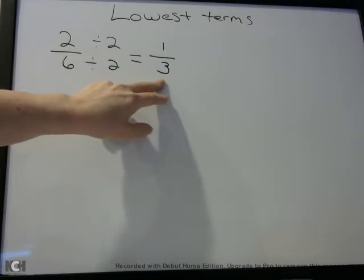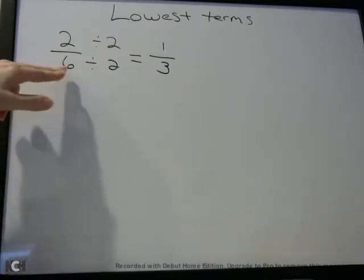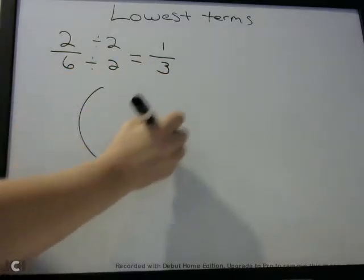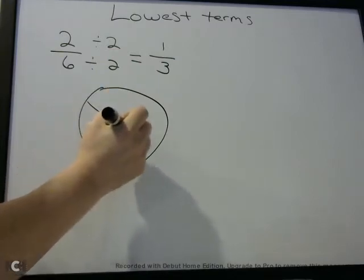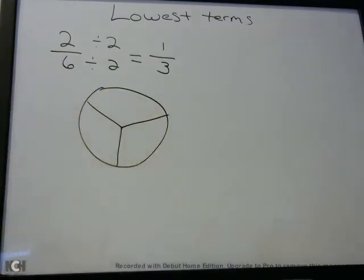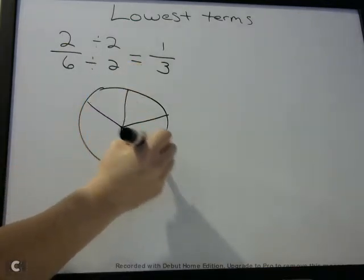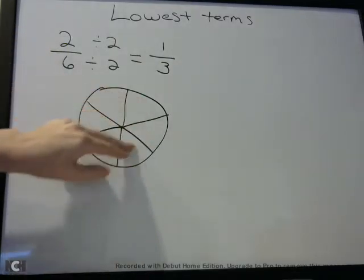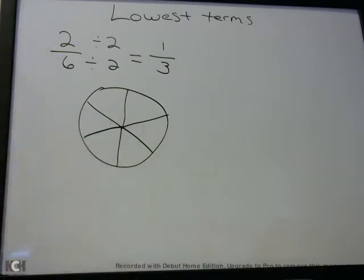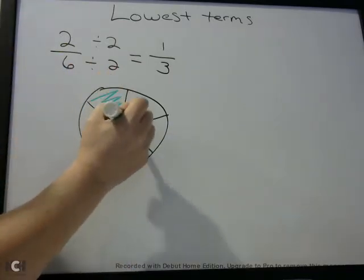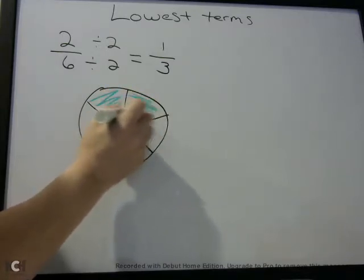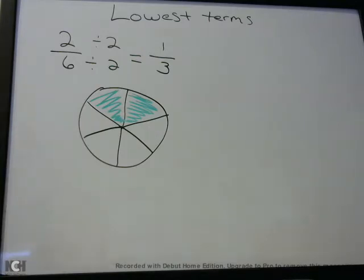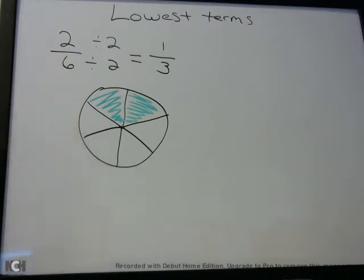So this fraction is in lowest terms. What is this really saying? We're saying 2/6 is equal to 1/3. Let's say we had a pie and we divide it into 6 parts. We're looking at the fraction 2/6 — we have 6 parts — and we're going to color in 2/6 of them. So 2 of the 6 pieces of the pie are colored in, representing 2/6.